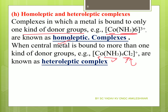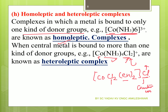Remember: if chlorine is inside the coordination sphere, it acts as a ligand. But if it is outside the sphere, it is not a ligand — it acts as a counter ion. For example, in [Co(en)Cl2]Cl: the chlorine outside the bracket is the counter ion, and the chlorine inside is the ligand.